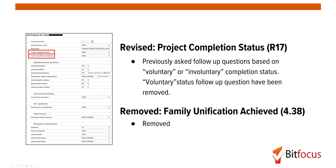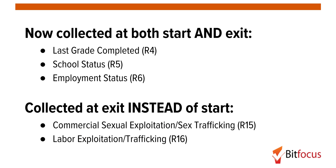Clients were previously asked follow-up questions based on voluntary or involuntary completion status. With the 2017 data standards, voluntary status follow-up questions have been removed. Additionally, the family unification achieved field has been removed. A few fields that were previously collected only at project start are now also collected at project exit: last grade completed, school status, and employment status.